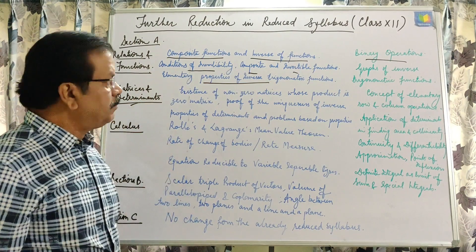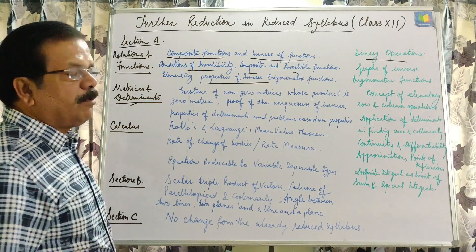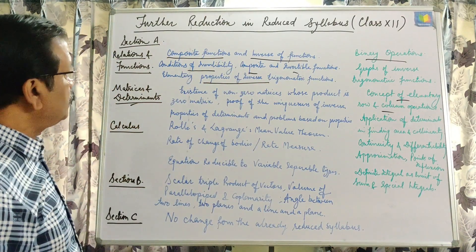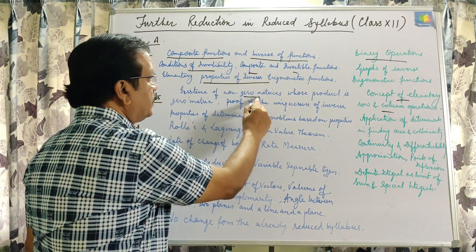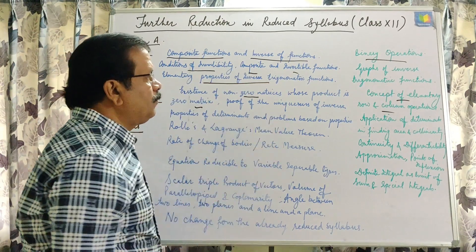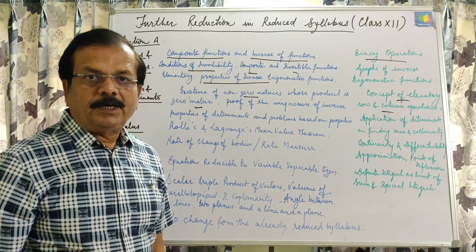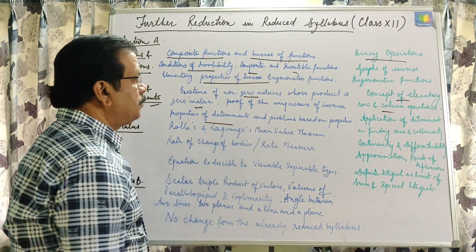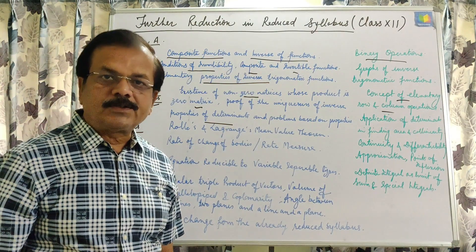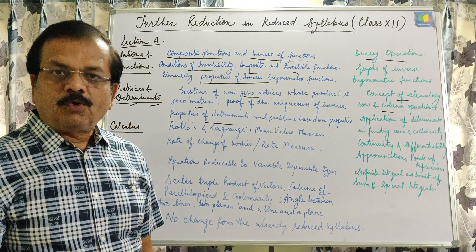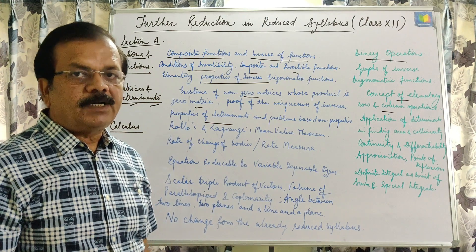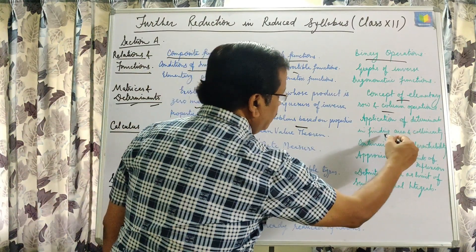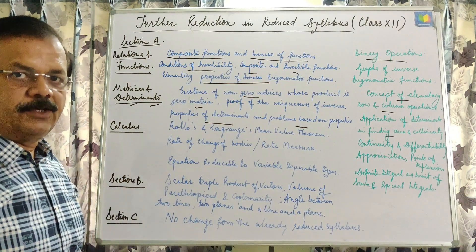Next, under Matrices and Determinants, the council had already reduced the concept of elementary row and column operations. Now from the reduced syllabus, existence of non-zero matrices whose product is the zero matrix, and proof of uniqueness of inverse, are also reduced. Regarding Determinants, properties of determinants and problems based on properties of determinants are also reduced from the scope of the syllabus — not from the main syllabus, but from the scope of the syllabus. The topic of application of determinants in finding area and collinearity was already reduced from the main syllabus.